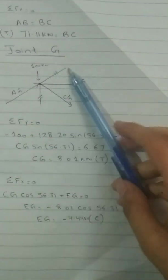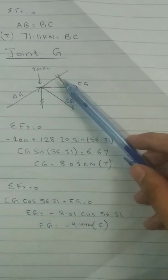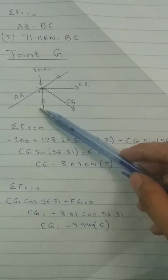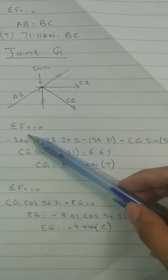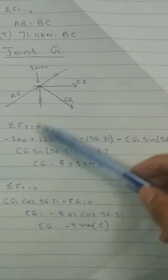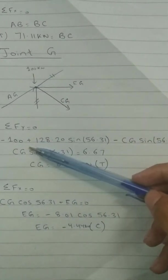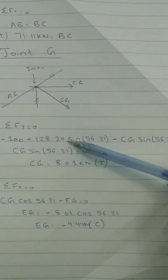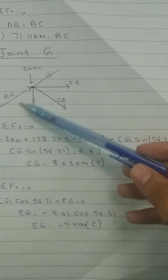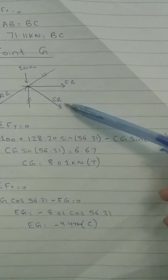And now joint G. You can see that we have already marked these two as zero force members. So by taking the sum of forces in y direction equal to zero, you can see that this force is acting downward, taking its sin as minus 100 plus 128.25, this is AG force, and this is CG.